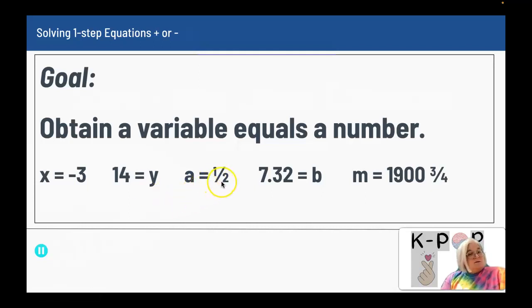A equals 1/2 - you can have a fraction equal to the variable. You can have a decimal value equal to the variable, like 7.32 equals B.